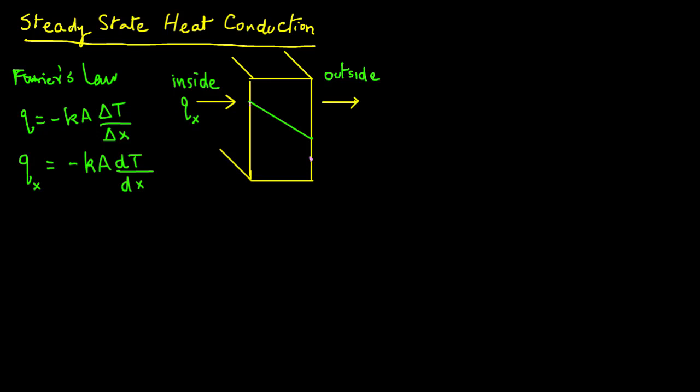What we want to do is solve this equation. To solve a differential equation, we need boundary conditions — two boundary conditions for temperature at certain locations. If we have a coordinate system with X increasing from the inside of the wall to the outside, we can say that at X equals X1, temperature T equals T1, and at X equals X2, temperature T equals T2.